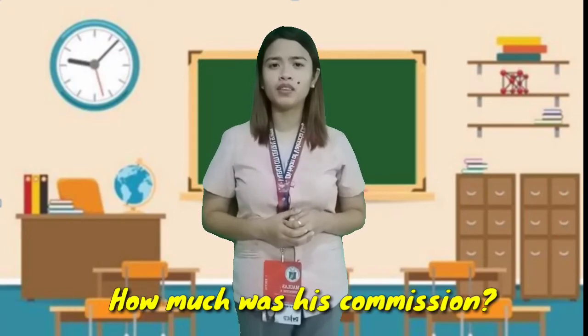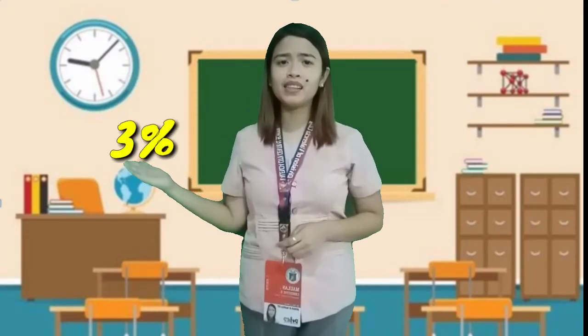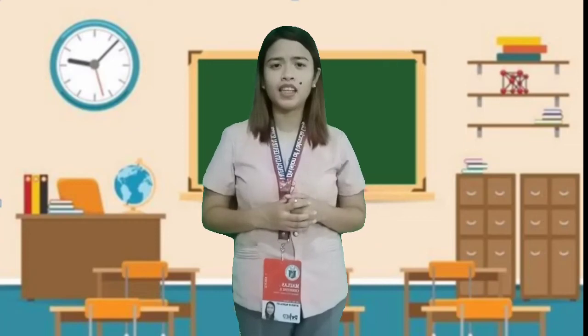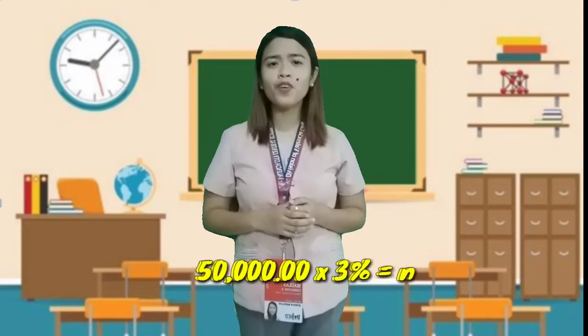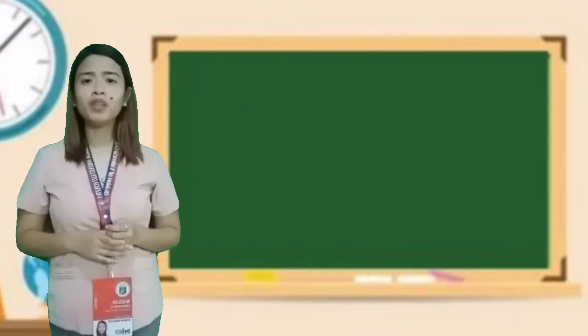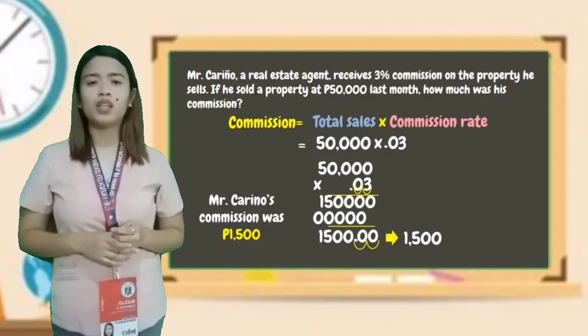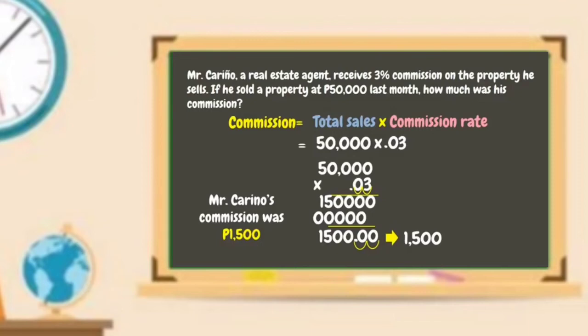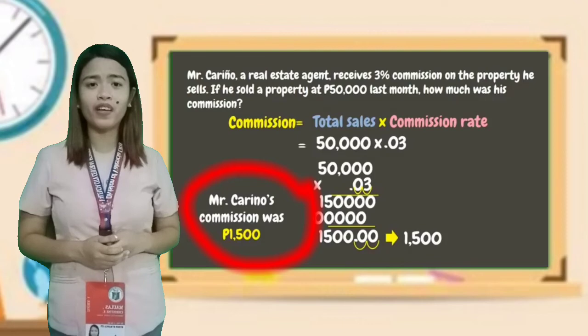What is asked in the problem? The answer is: how much was his commission? The given numbers are three percent and fifty thousand pesos. The operation to be used is multiplication. The number sentence is: fifty thousand times three percent equals N. So, the formula of commission is total sales times commission rate. The total sales is fifty thousand and the commission rate is three percent, so the answer is one thousand five hundred pesos.